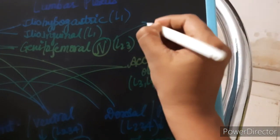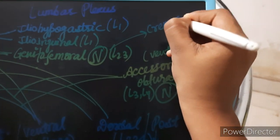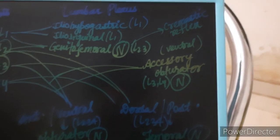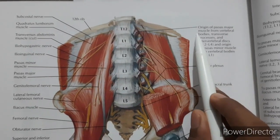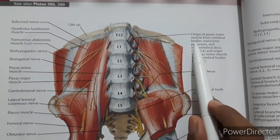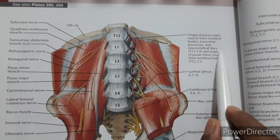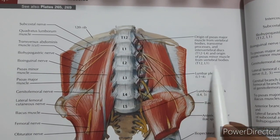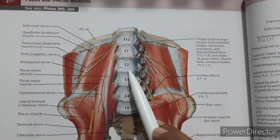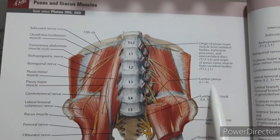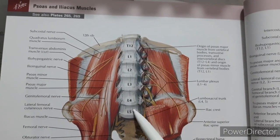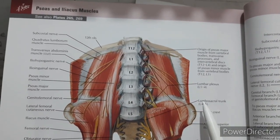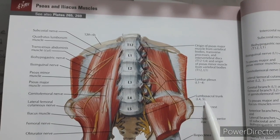The genitofemoral nerve gives the cremasteric reflex. The origin of psoas major muscle is from the vertebral bodies, transverse processes, and intervertebral discs from T12 to L4, and psoas minor from vertebral bodies T12 to L1. The lumbar plexus is formed by L1 to L4, with L4 also contributing to the lumbosacral plexus onwards.